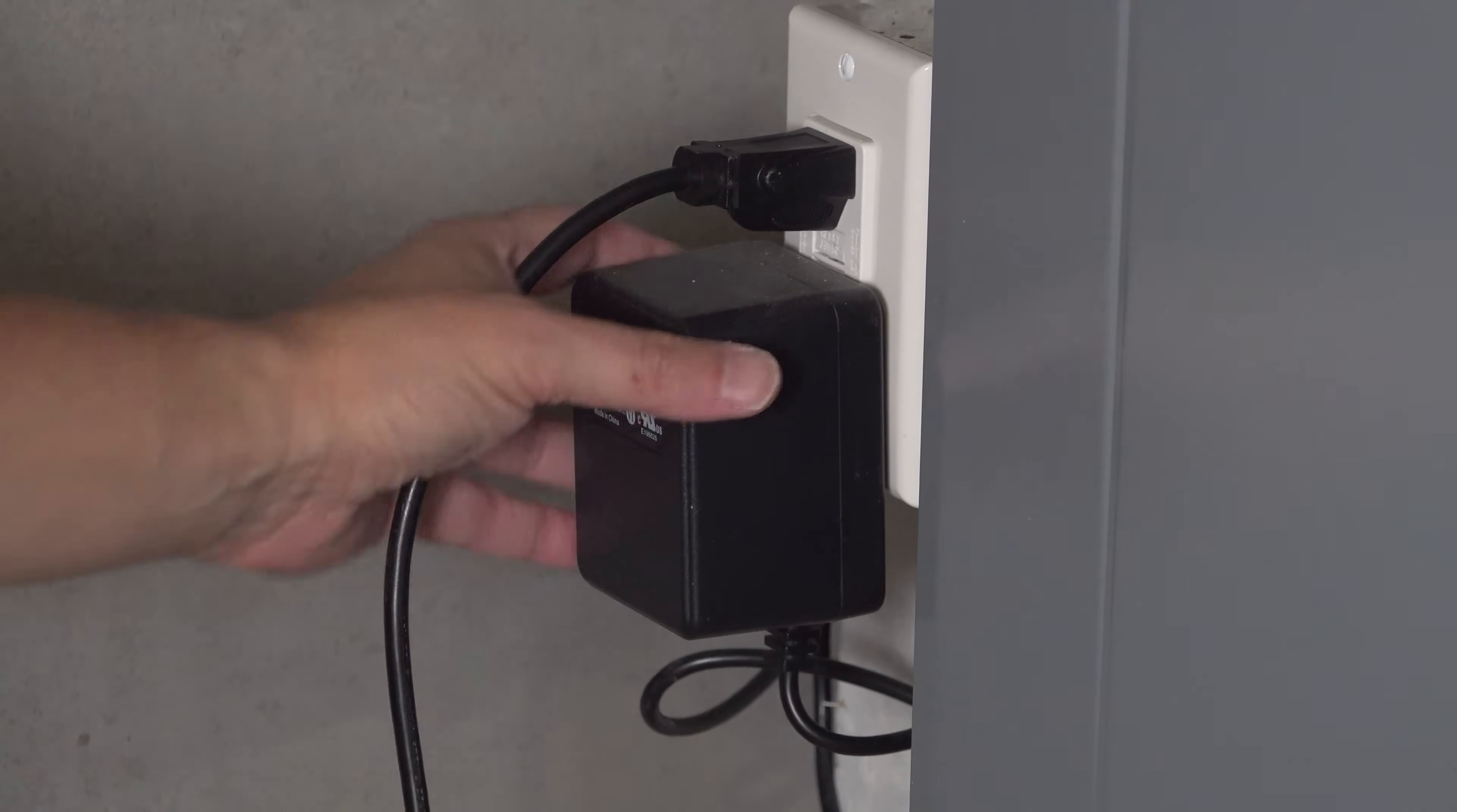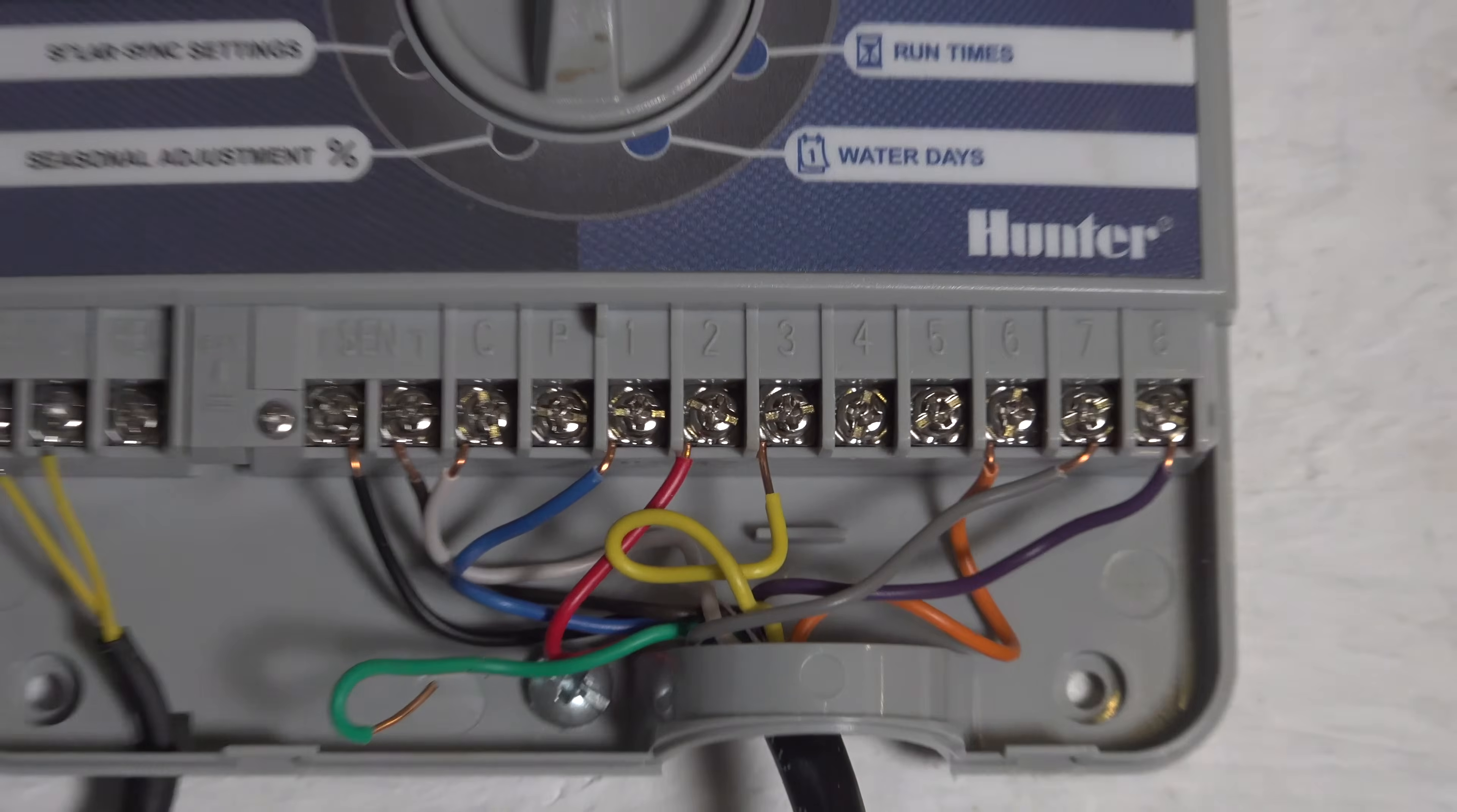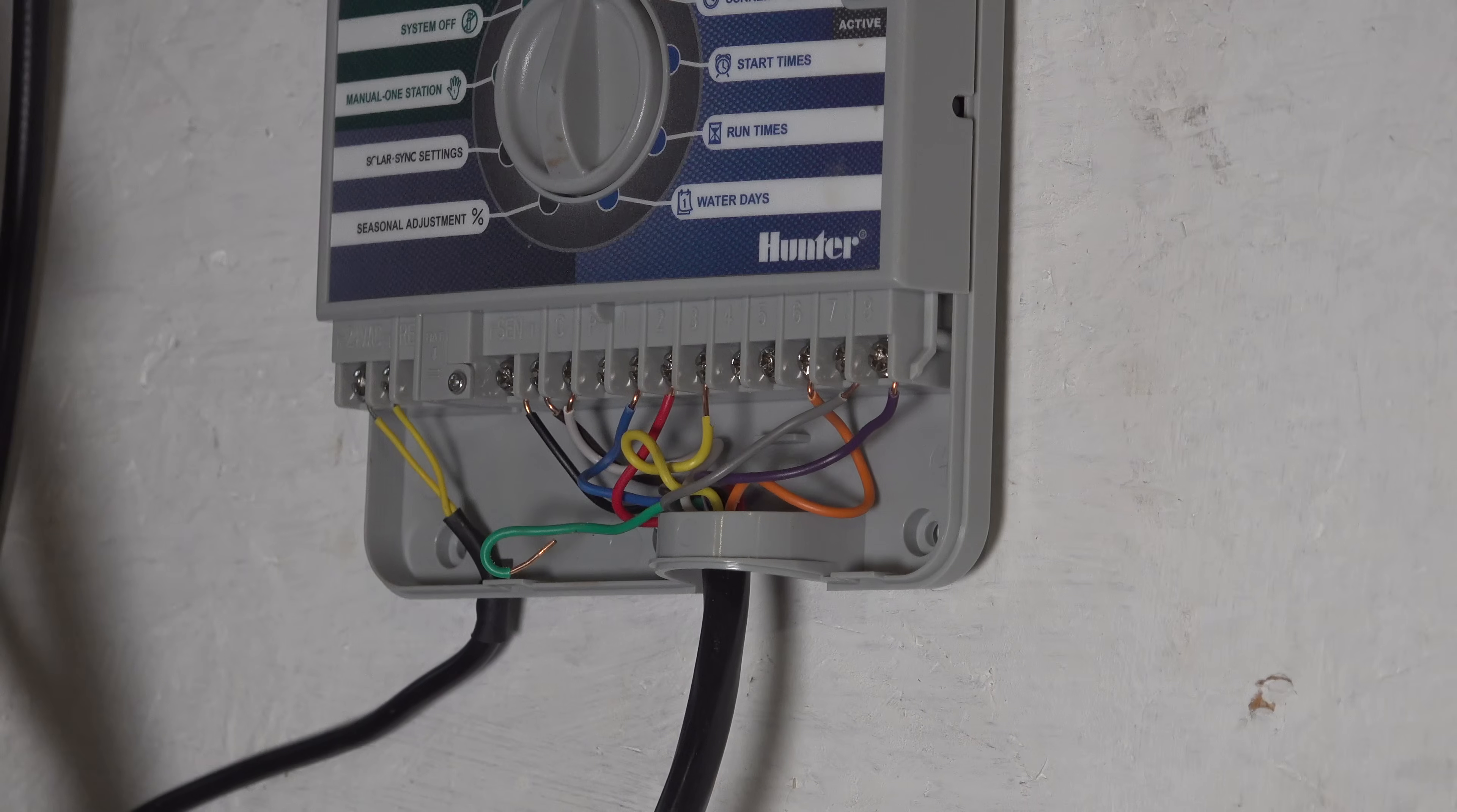Next, you'll want to remove the power supply that's running your controller. Don't panic when you see all these wires, because the first tip is those colors don't mean anything at all. What matters is where each color is connected to.